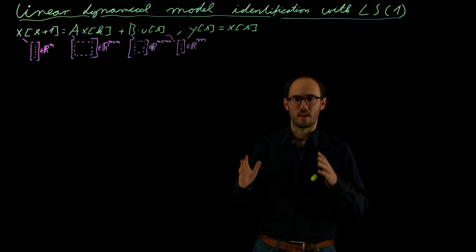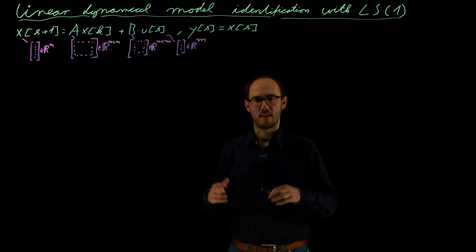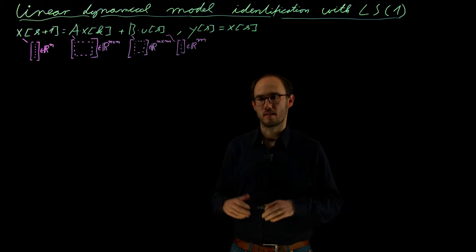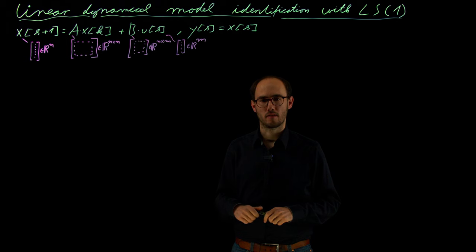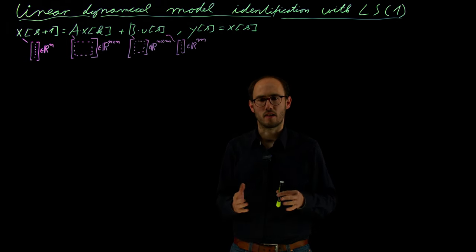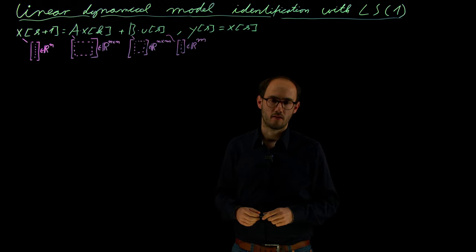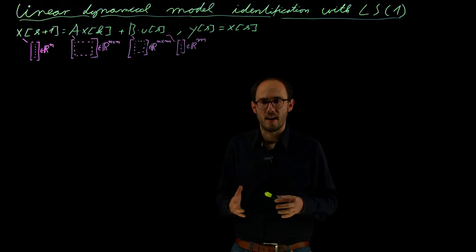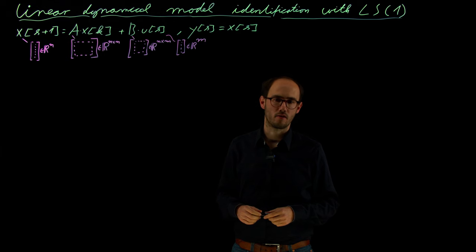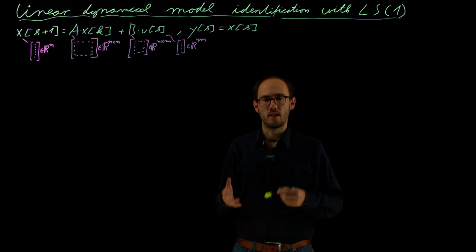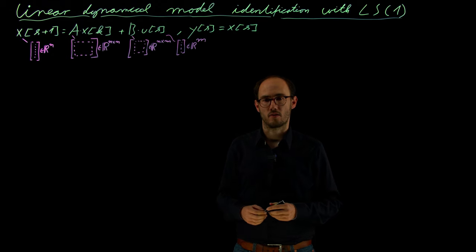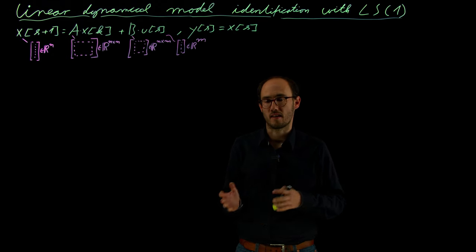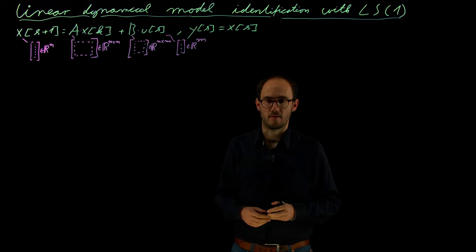Hello everyone. In the previous videos we have discussed the least squares estimator in many different variants. However, we have just applied it to the simple case of a static system where we did not really consider any temporal considerations. As we are going to focus on dynamic systems, we need to transfer the least squares identification also to dynamical systems and that is what we will do in this and in the next videos.